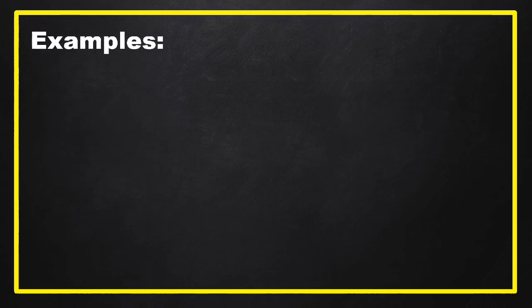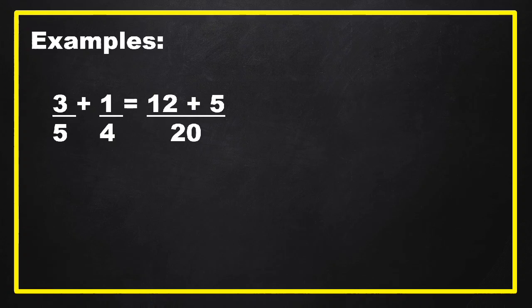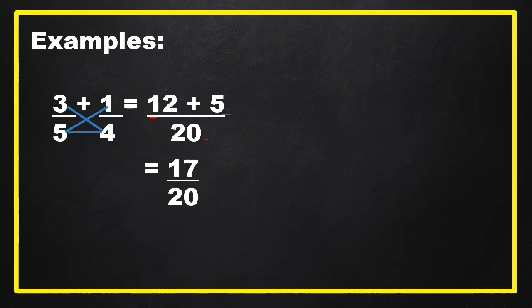We have some examples. The first one is 3 fifths plus 1 fourth. These are dissimilar fractions because they have different denominators, 5 and 4. Using the cross-product method: multiply 3 times 4 to get 12, then 5 times 1 to get 5, and 5 times 4 to get 20. Add the numerators: 12 plus 5 equals 17 over 20. There is no common factor between 17 and 20, so 17 over 20 is our final answer.